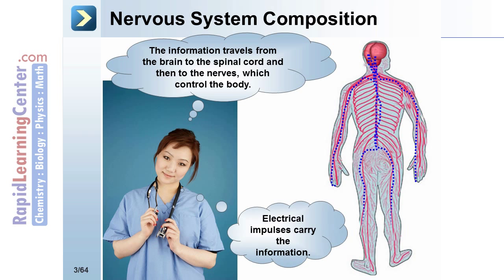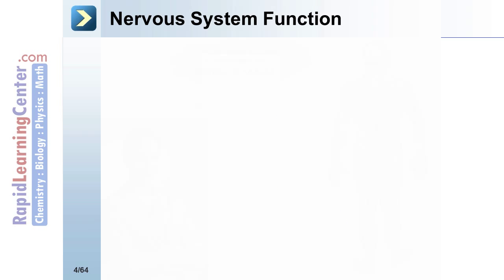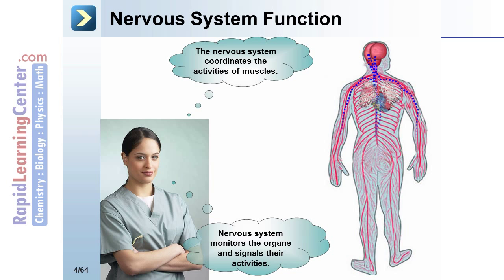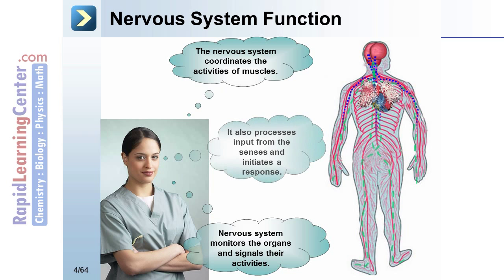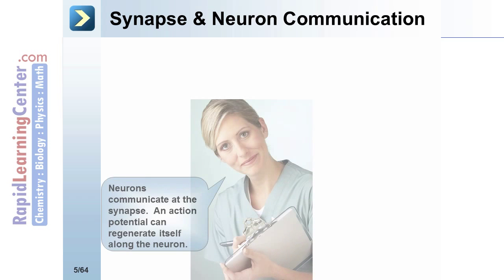Electrical impulses carry information, and information also travels from the body to the brain. The nervous system coordinates the activities of muscles, monitors the organs, and signals their activities. It also processes input from the senses and initiates a response.